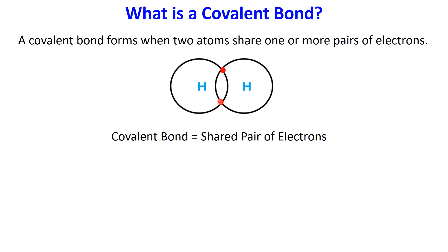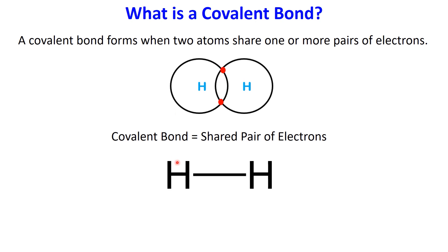In a hydrogen molecule, H2, each hydrogen atom brings one electron to the bond. By sharing this pair of electrons, both atoms become stable. This shared pair works like glue, holding the atoms together.